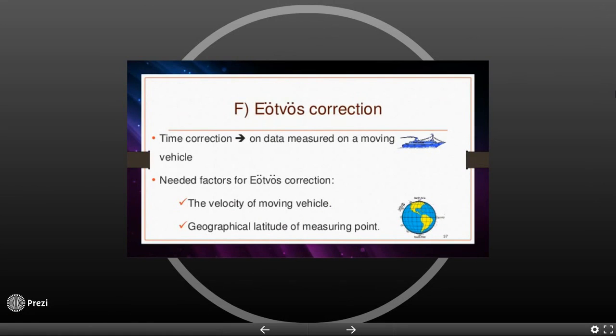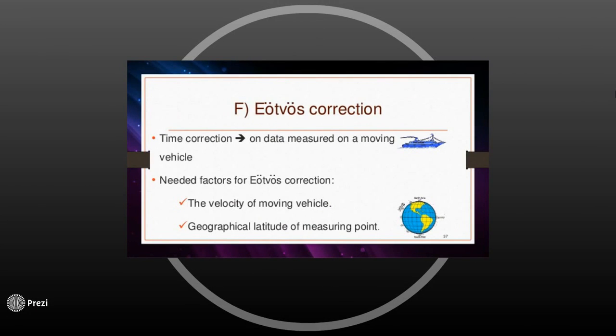The next type of correction is Eötvös correction. We have to apply it when we are measuring the gravity attraction on the surface from a moving vehicle. There are only two factors that we have to know while conducting this correction: the speed of the moving vehicle and the geographical coordinates of the measuring point.